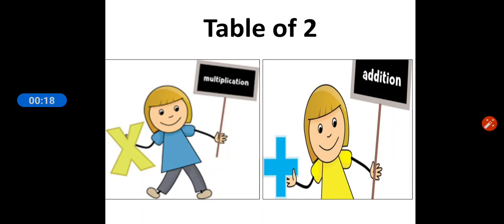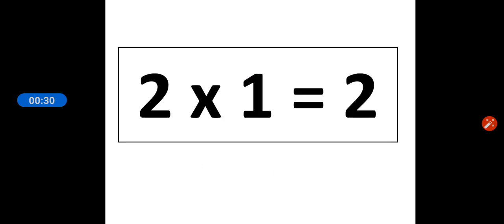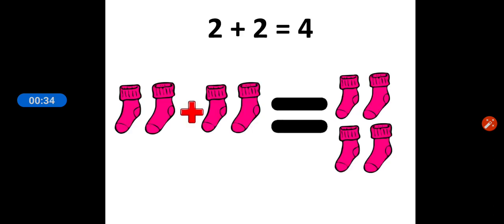When we have one pair of socks, we can write in addition form as two plus one is equal to two, and in multiplication form we write as two ones are two.